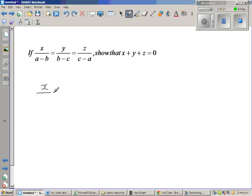So x over a minus b is equal to y over b minus c is equal to z over c minus a. So let us let that equal to m. Now this implies...